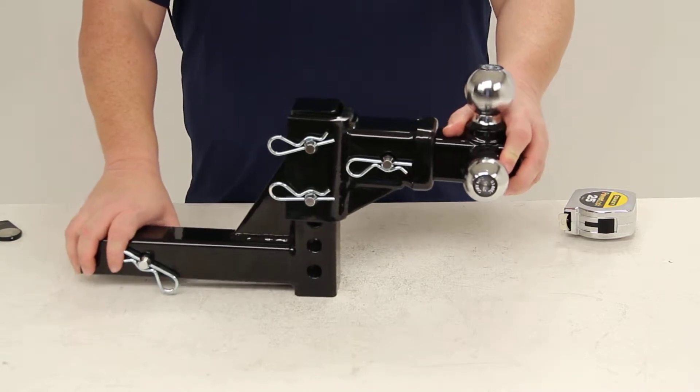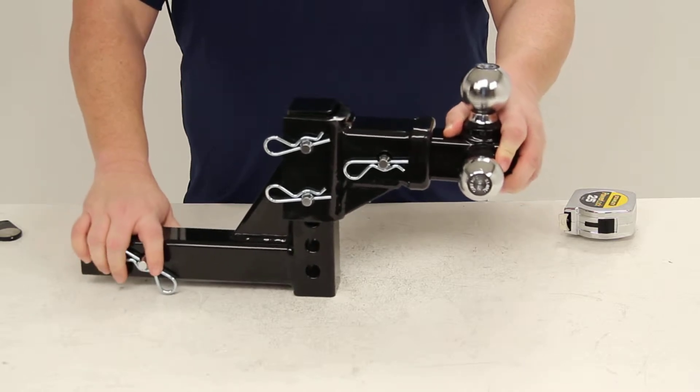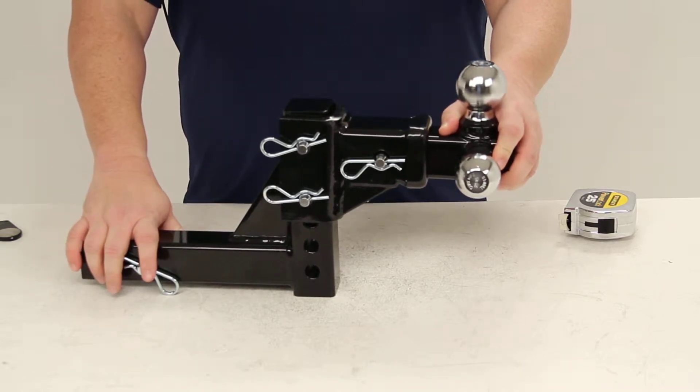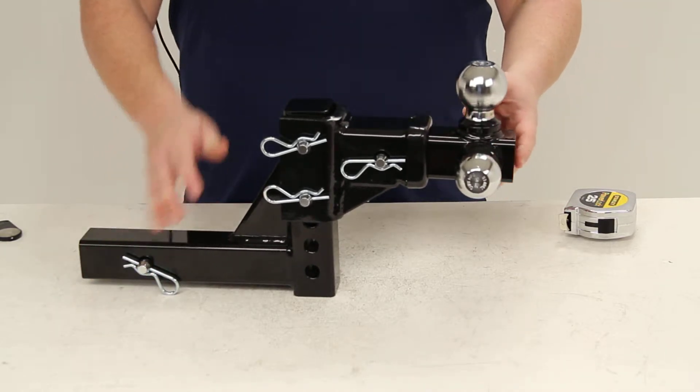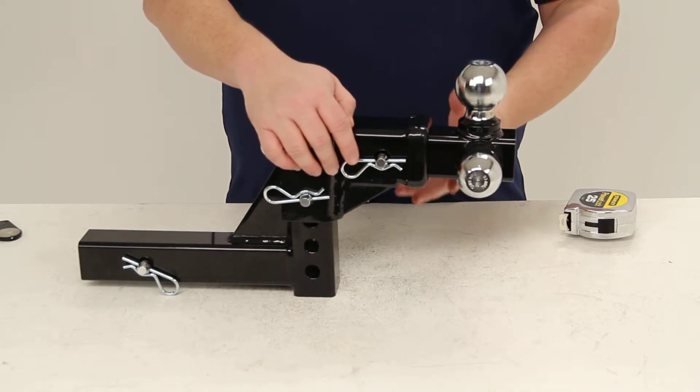The solid steel construction is very strong and durable—folks, this is solid. It weighs in at about 44 pounds, so it definitely has some heft to it. There are multiple balls to fit your various towing needs.